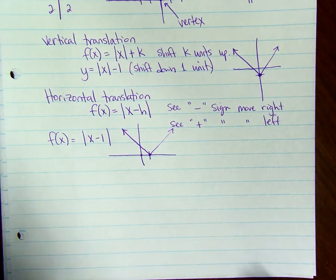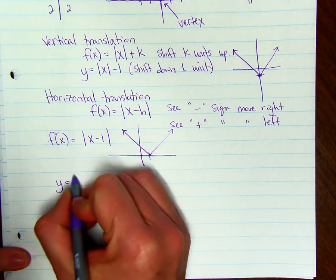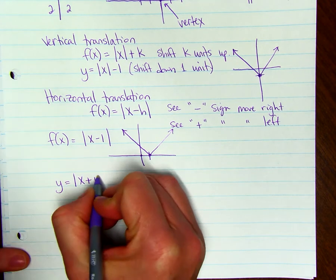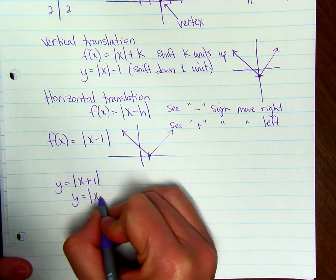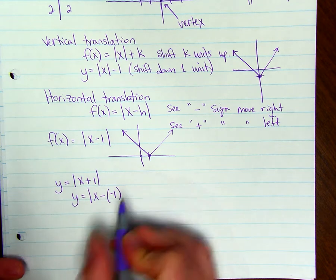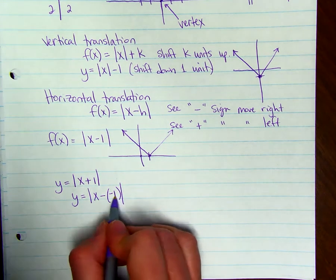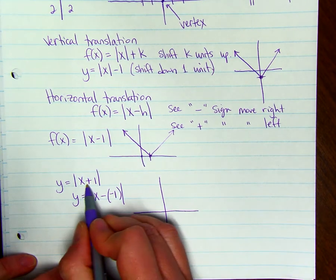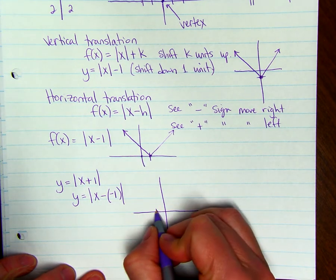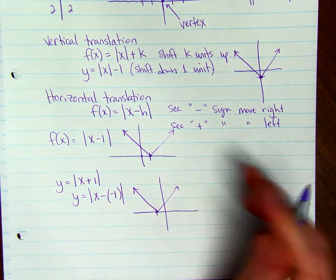If we have y equals the absolute value of x plus 1, that's like saying y equals the absolute value of x minus a negative 1. Because h is negative, we're going to go to the left. So when you see a plus sign, move to the left 1 unit, then graph the parent function.